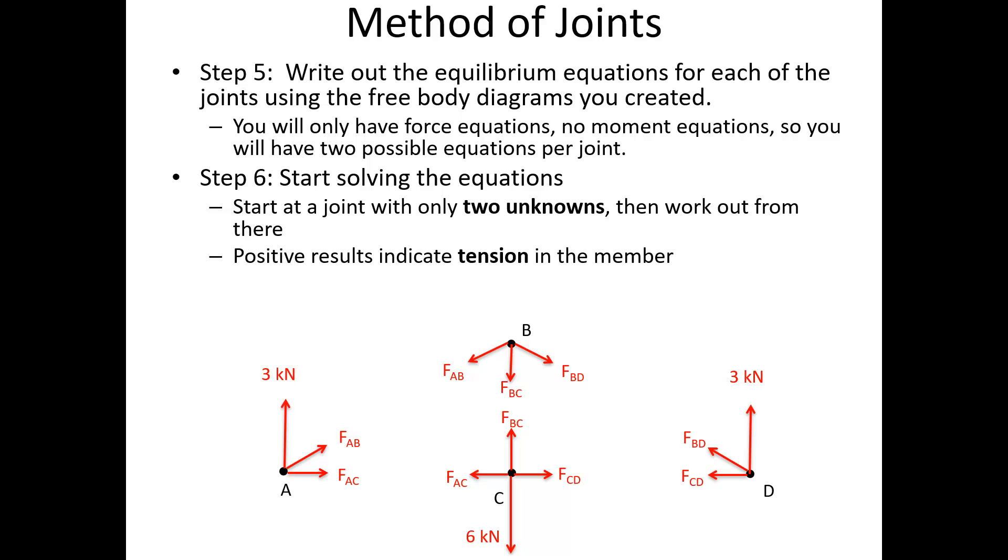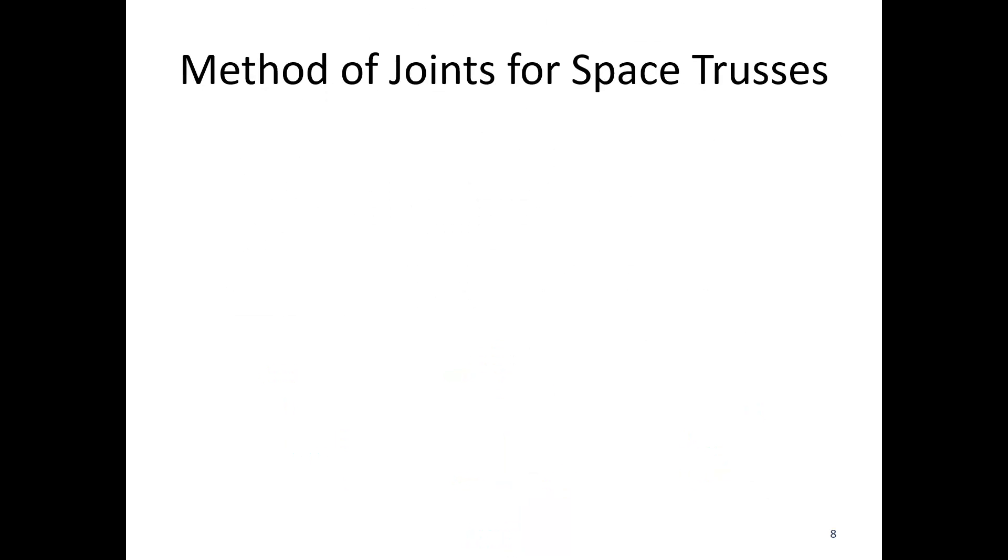Alright, so positive results in all of this indicate tension in the member, and that's because we assumed tension. So if we assumed the right direction for these forces, we get a positive number. If we did not assume the right number, so since we assumed everything was tension, a negative number in our equations, a negative result, indicates compression. So the forces, rather than actually pulling like they are shown here, say member FAB, I've got a negative number, they'd actually be pushing on either end. And that means the member itself is in compression.